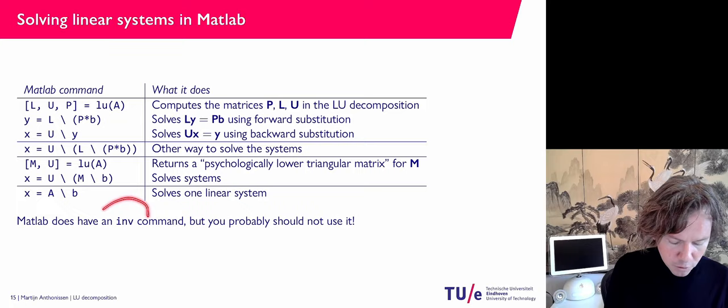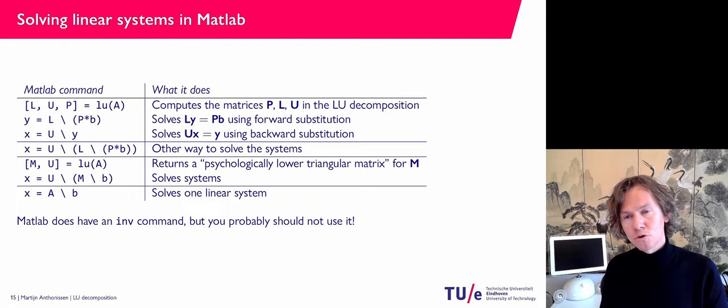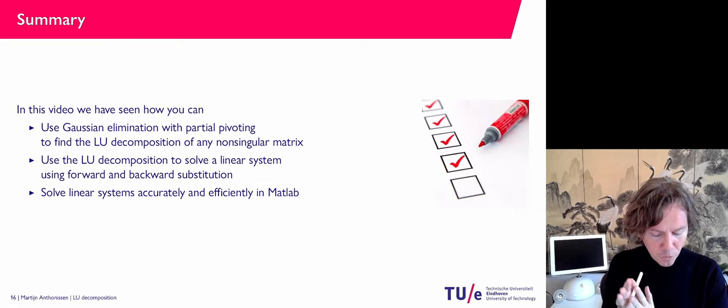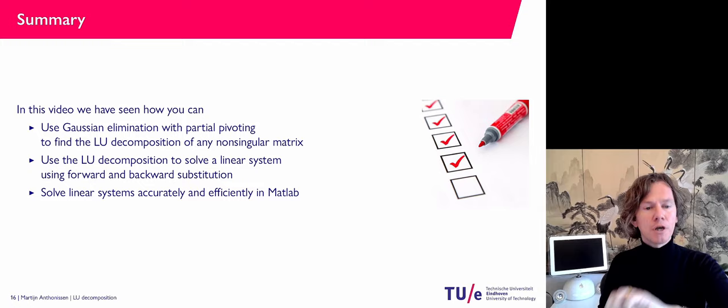To summarize: we have seen how Gaussian elimination with partial pivoting works, which is the standard way to solve dense linear systems in numerical algorithms. We have seen how the LU decomposition can be used with forward and backward substitution to solve linear systems efficiently. And we have seen how to do this in MATLAB. That wraps up this video — I hope everything was clear, and I'll see you in the next video.